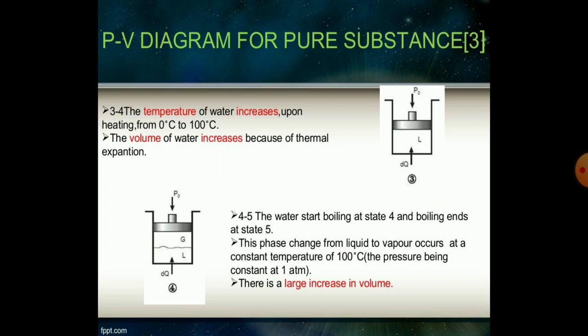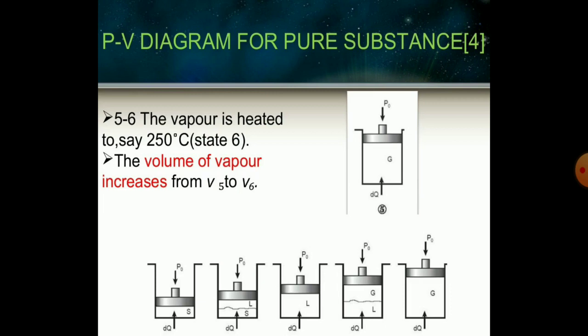From point three to four, the temperature of water increases upon heating from zero to 100 degrees Celsius. The volume of water increases because of thermal expansion. At process point four to five, the water starts boiling. At stage four the boiling ends at state five. This phase change from liquid to vapor occurs at constant temperature of 100 degrees Celsius. There is a large increase in volume of water.